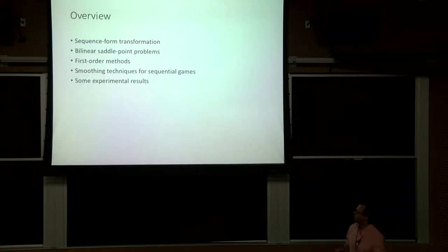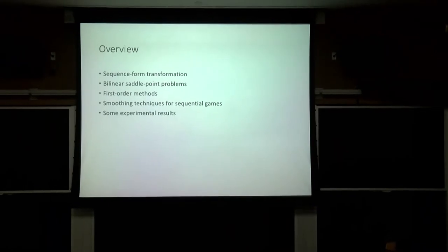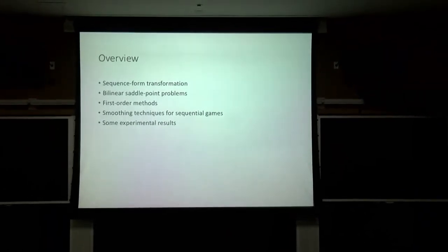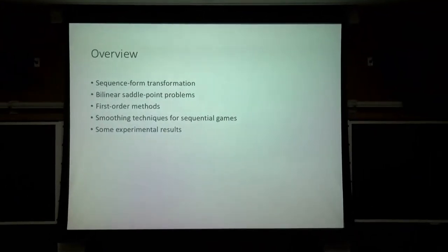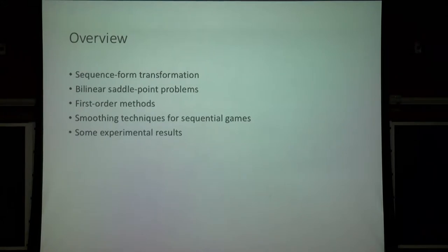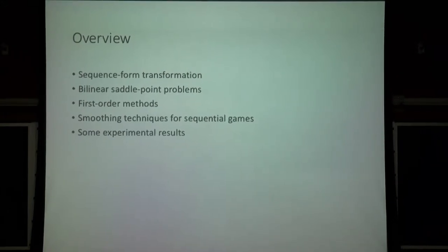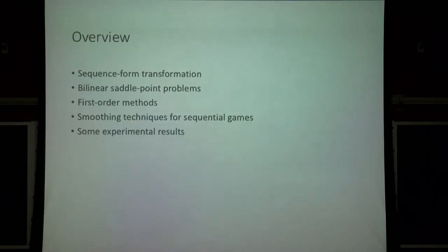Here's a brief overview of the talk. I'm going to talk about the sequence form transformation, a particular way of formulating the strategy spaces of extensive form games; bilinear saddle point problems, the class of optimization problems that computing zero-sum Nash Equilibria falls in; first-order methods, the class of algorithms we'll use; and smoothing techniques for sequential games. Basically, we're going to run a gradient descent-like algorithm on the strategies of the two players. Finally, I'll present experimental results showing this works in practice.